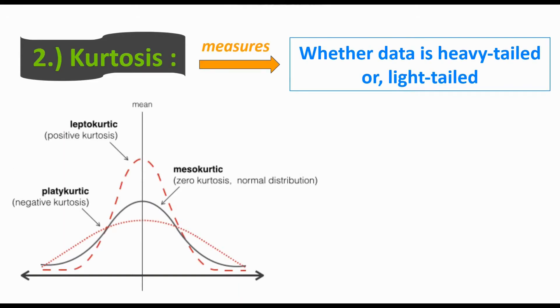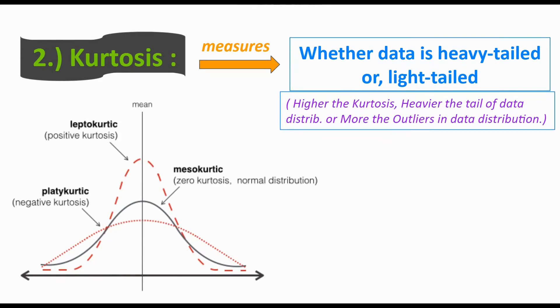Now kurtosis - what does it tell us? It measures whether the data distribution is heavy-tailed or light-tailed. When I say higher kurtosis, it means the heavier the tail of a data distribution is, or you can say the more outliers we have there.